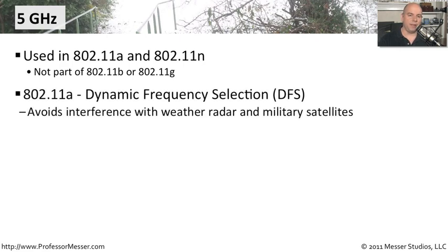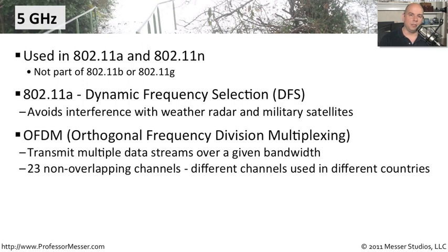802.11a uses these 5 GHz frequencies with something called dynamic frequency selection, or DFS. This is a relatively new addition to the standard. By adding this DFS functionality, your access point will intentionally avoid interference with things like radar or military-type systems, allowing you to coexist with other devices using those 5 GHz frequencies. The multiplexing method used is OFDM — orthogonal frequency division multiplexing — allowing transmission across many channels simultaneously without conflict. There are 23 non-overlapping channels, and different channels are used in different countries.